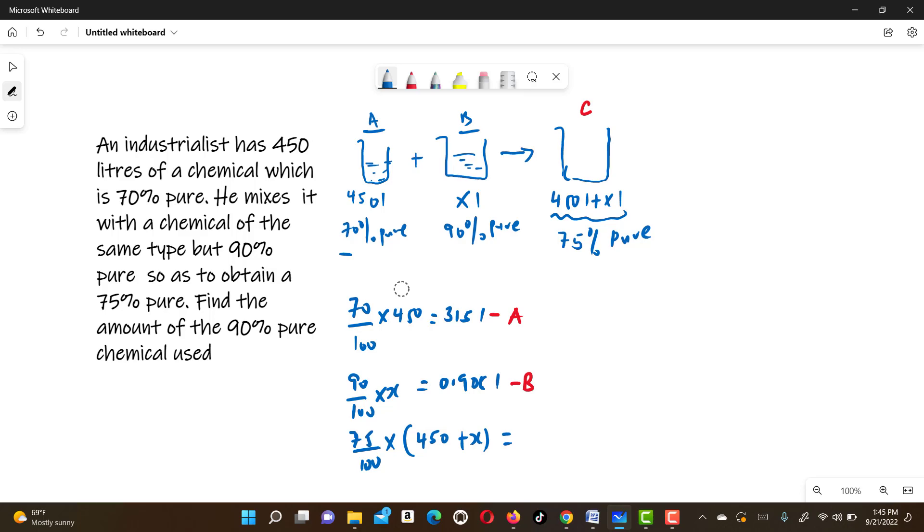Opening the bracket, we multiply 75 over 100 times 450. That will give us 337.5 liters, then plus 0.75X. So in the mixture C, this amount of liters are pure.